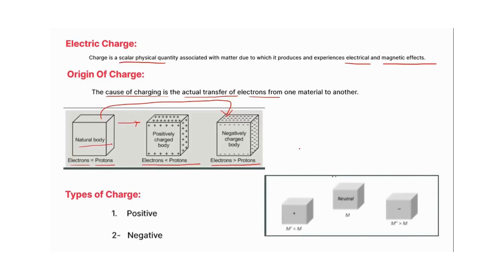Another consequence related to charge concerns mass. What happens to the mass of a body? If we have a neutral body of mass M and it becomes a positively charged body by donating electrons, its new mass M-dash will always be less than the original mass of the neutral body. Conversely, if the neutral body becomes a negatively charged body by accepting electrons — since electrons are accompanied by mass — its new mass M-dash will always be greater than the original mass. Whenever a neutral body becomes positively charged, its mass is always lesser than the original mass.